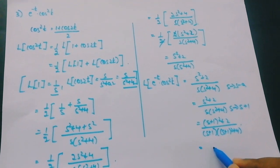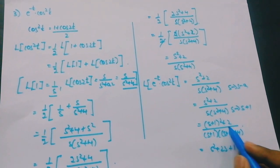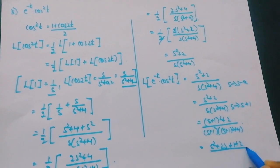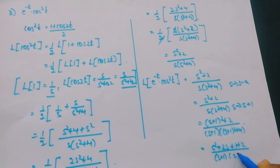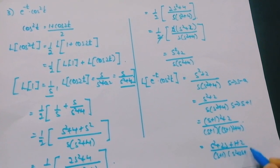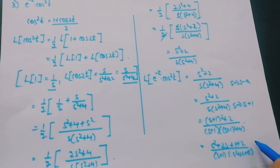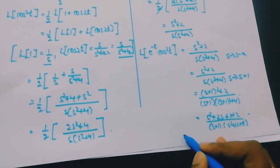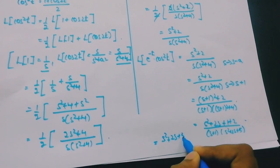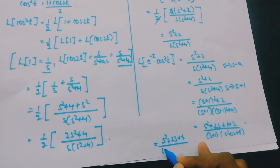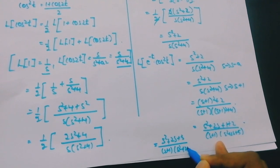Applying the first shifting theorem for L{e^(−t)·cos²(t)}: replace s with s+1 in (s²+2)/(s·(s²+4)). This gives (s²+2s+1+2)/((s+1)·(s²+2s+1+4)) = (s²+2s+3)/((s+1)·(s²+2s+5)).